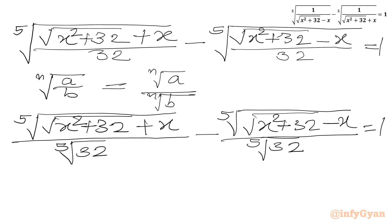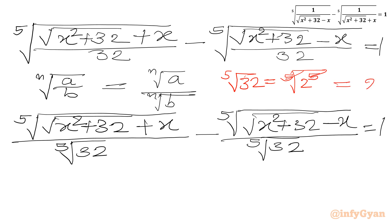Now we can simplify fifth root of 32. We write fifth root of 2 to the power 5; the fifth root and the power 5 cancel, giving us fifth root of 32 equals 2. So in our equation we replace both instances of fifth root of 32 with 2.